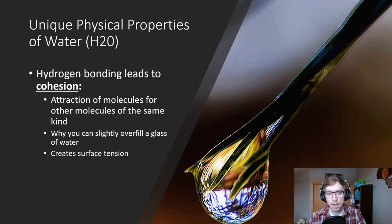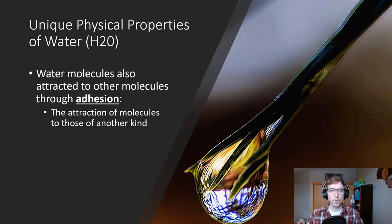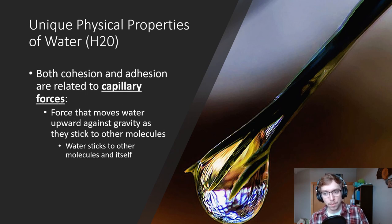Water is very good at sticking to itself, and because of that you can have that little bit of surface tension. It's also why things like mosquitoes or pond striders can ride atop water on a pond. Water molecules also attract to other molecules through the process of adhesion. This is basically the attraction of molecules to those of another kind. Both of these forces relate to what we call capillary forces, and that forces water to move upwards against gravity as they stick to other molecules. Water sticks to itself, water sticks to other things. This is kind of what helps water move throughout things like soil, trees and plants. These processes lead to evapotranspiration.